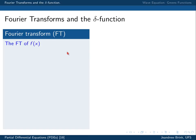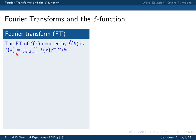A Fourier transform is a linear transform of the information content of a function into the frequency domain. It is denoted as a different function, usually with a hat, of a different variable k, which is an indication of the frequency space. To calculate the Fourier transform of f of x, we do it by means of a complex integral: the integral from minus infinity to infinity of f of x times e to the minus ikx dx, divided by 2π.